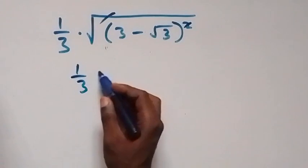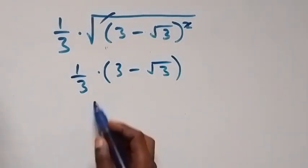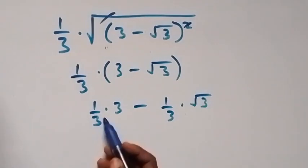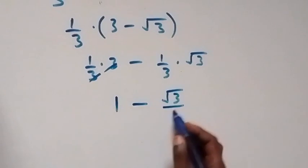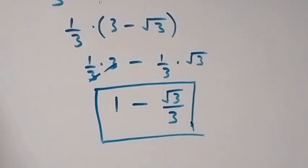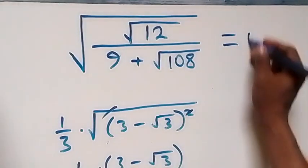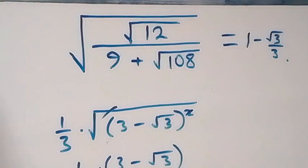The square cancels with the square root, leaving 1/3 times (3 − √3). Opening the bracket: 1/3 times 3 minus 1/3 times √3. The 3s cancel, giving 1 minus √3/3. So the final answer to this problem is 1 − √3/3. Thank you for watching — don't forget to subscribe, turn on the notification bell, share the video, and see you next class!